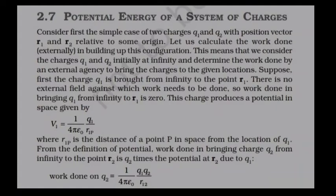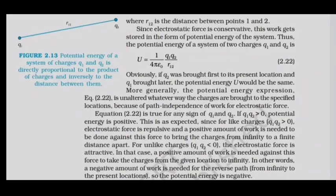Charge q1 produces a potential V = (1/4πε₀)(q1/r1p) at any point P. The work done in bringing q2 from infinity to point r2 is q2 times the potential at r2 due to q1, giving W = (1/4πε₀)(q1·q2/r12) = k·q1·q2/r12, where r12 is the distance between the two charges.